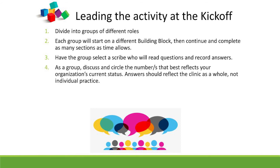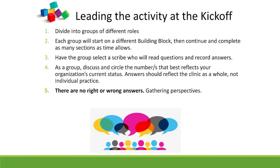Have the group discuss and circle the number that best reflects their organization's current status. This really should be about the clinic as a whole, not for an individual practice. One care team might be doing something another isn't, but we're asking clinics to think about the clinic as a whole. It's totally okay for one group to circle multiple numbers because they might not all have the same perspective, and that's good information. It's really important to emphasize that there are no right or wrong answers.